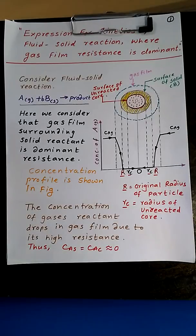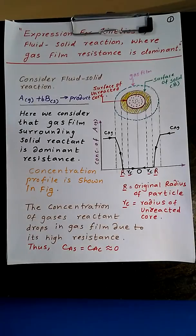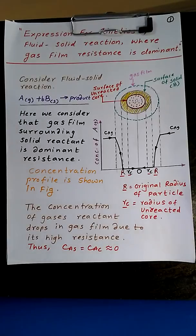Hello friends, today we are going to study the expression for kinetics of the fluid-solid reaction where the gas film is the dominant resistance. We will consider a reaction A in the gas phase plus b times B in the solid phase giving a product. Here we consider that the gas film surrounding the solid reactant is the dominant resistance.